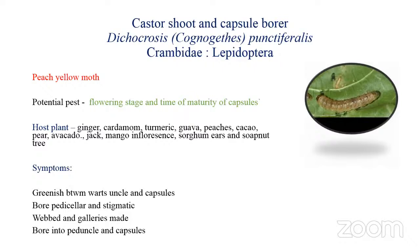This pest is also known to attack ginger, cardamom, turmeric, mango inflorescence, and sorghum ears. Coming to the symptoms or nature of damage, the insect has been noted to attack the crop only in the flowering stage and at the time of maturity of the capsules.